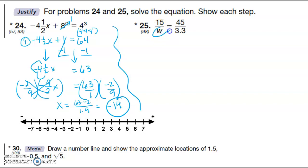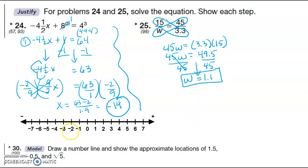Here we're going to cross multiply. So I have 45W is equal to 3.3 times 15. I get 49.5 over 45. So I get W equals 1.1.